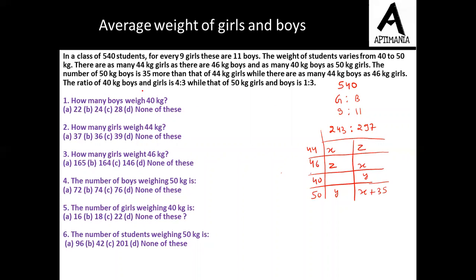Now the ratio of 40 kg boys and girls is 4 ratio 3. So since this is y over here, I can simply substitute 3 by 4 of y. So from here we can say that y upon x plus 35 is 1 ratio 3. On solving, we will get 3y is equal to x plus 35 as our first equation.